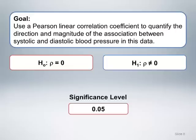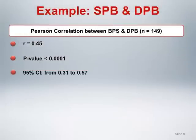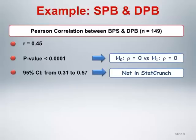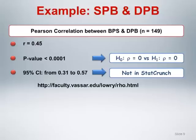Interestingly, correlation coefficients are commonly reported in the literature in combination with p-values for this non-meaningful hypothesis and without 95% confidence intervals. The estimate of the correlation between systolic and diastolic blood pressure for this sample of 149 patients is 0.45, with a p-value less than 0.0001 and a 95% confidence interval from 0.31 to 0.57. Like many statistical packages, StatCrunch produces the traditional p-value testing the standard null hypothesis but does not produce a 95% confidence interval. The confidence interval given here was calculated using a website at Vassar, which will be demonstrated in the StatCrunch demo portion of the module.